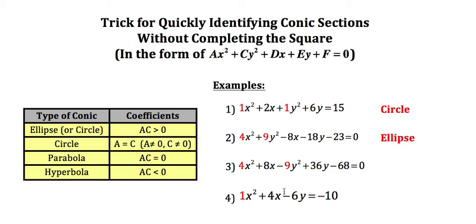For the third example I again have highlighted a and c. So a is 4 and c is actually negative 9 right there—you've got to recognize that it is a negative. So 4 times negative 9 is negative 36, which means a times c is less than 0, which means I have a hyperbola.